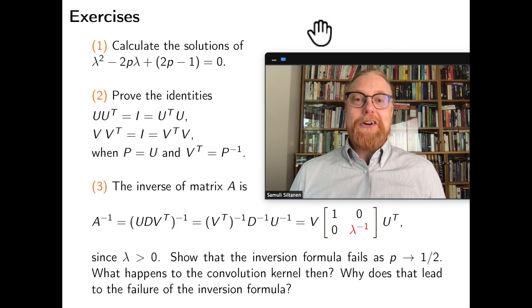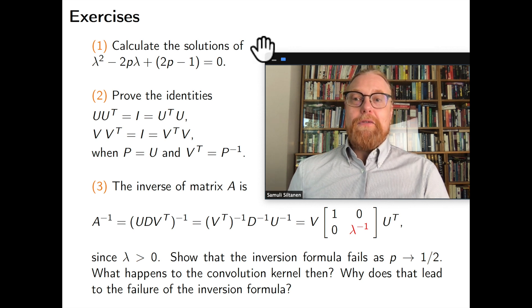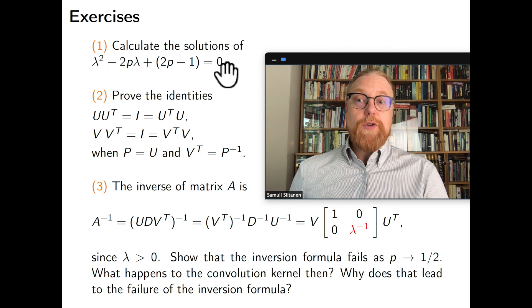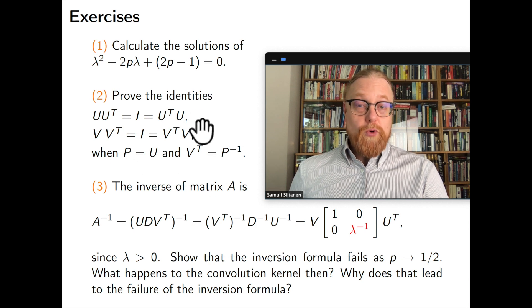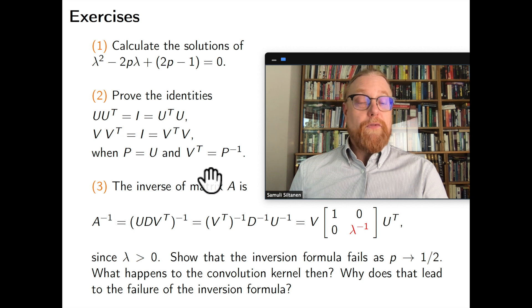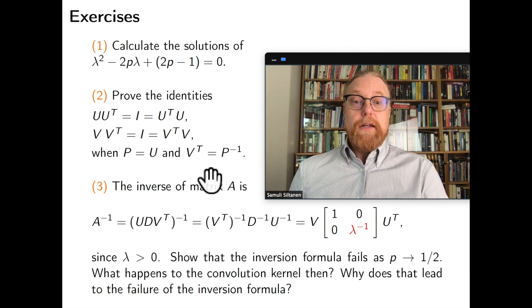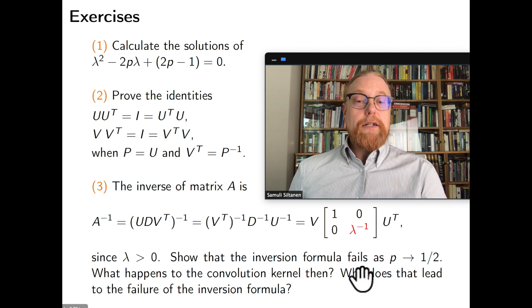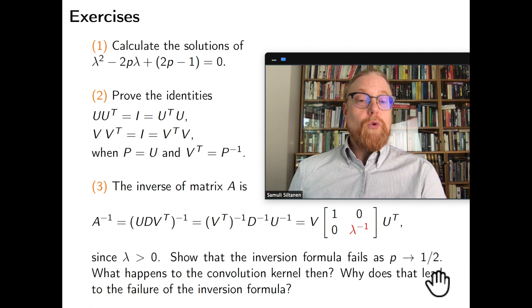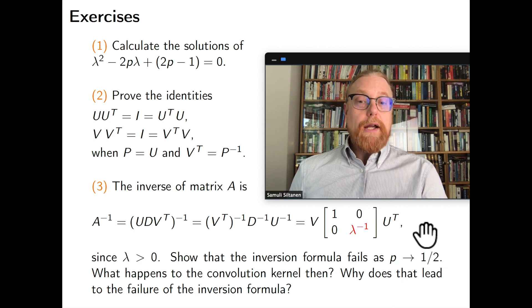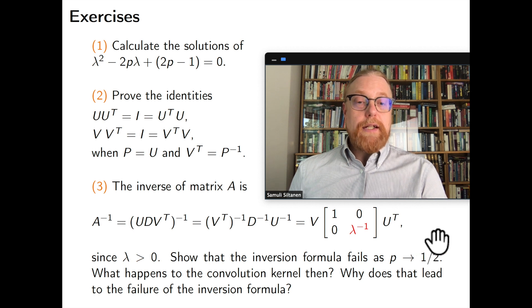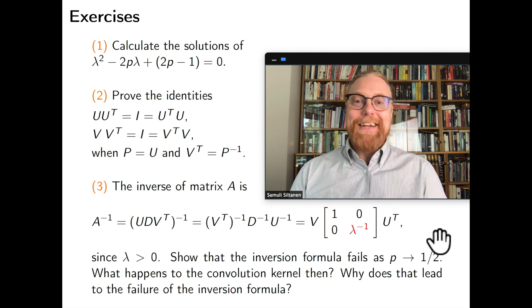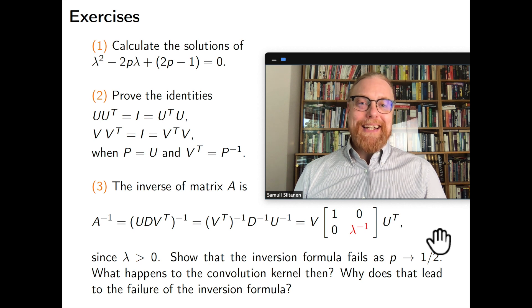And finally here are a couple of exercises for you to go through the material. First of all use the quadratic solution formula to find the eigenvalues for the matrix. Prove that these identities hold when U and V come from the diagonalization process. And then this is mostly related to deconvolution and ill posed inverse problems. See what happens when p goes close to one half. What happens on the limit? Why does this formula fail? And how is it connected to the form of the convolution kernel at the point of failure? Thank you for watching and see you soon again. Remember to subscribe!